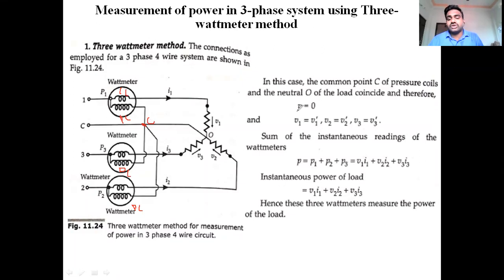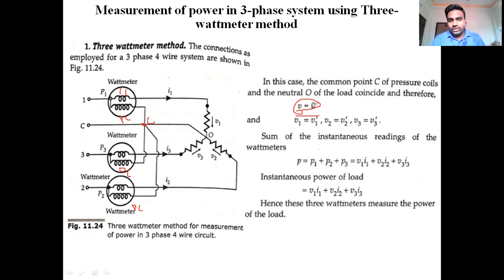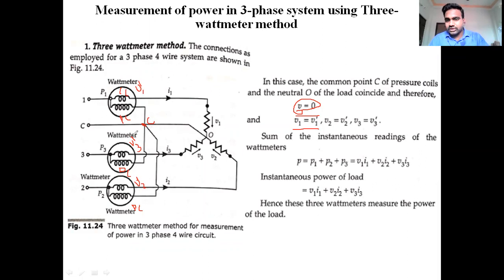Since the common point is connected on the neutral wire, its voltage is zero. Therefore, the individual wattmeter voltage readings become: V1 = V1', V2 = V2', V3 = V3'. The wattmeter readings are V1' for wattmeter 1, V2' for wattmeter 2, and V3' for wattmeter 3.